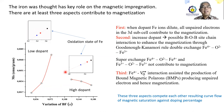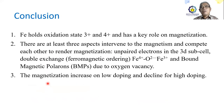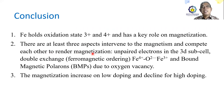Magnetization increases at low doping regions and declines for high doping regions. The conclusions of our work are: one, iron holds oxidation states 3+ and 4+ and has a key role in magnetization; second, there are at least three aspects interfering with magnetism and competing each other — unpaired electrons in the 3d subshells, double exchange ferromagnetic ordering, and iron 4+ or iron 3+ bound magnetic polarons to oxygen vacancies; finally, the magnetism increases at low doping and declines for high doping.